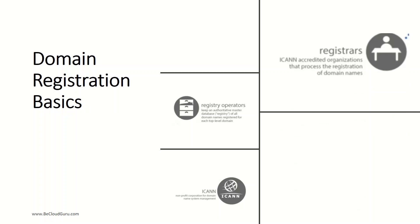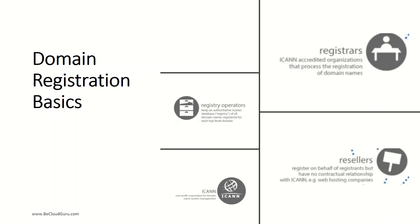Domain registrars are companies accredited by ICANN to process domain registrations for specific TLDs. For example, Amazon Registrar Inc. is a domain registrar for .com, .net, and .org domains. Domain resellers register domains on behalf of registrars but have no direct contractual relationship with ICANN — these are typically your web hosting companies. Amazon Route 53 is a domain reseller for Amazon Registrar and for its registrar associate Gandi, which is the associate registrar for Amazon Registrar.